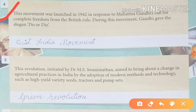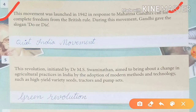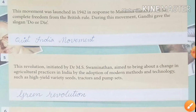Fourth point: This movement was launched in 1942 in response to Mahatma Gandhi's call for complete freedom from British rule. During the movement, Gandhi gave the slogan 'Do or Die.' Is moment ka naam hai Quit India Movement. Gandhi ji ne 'Karo ya Maro' ka slogan diya. Unhone British government se poorn swatantrata ke aahvan ke jawab mein yeh shuru kiya tha.